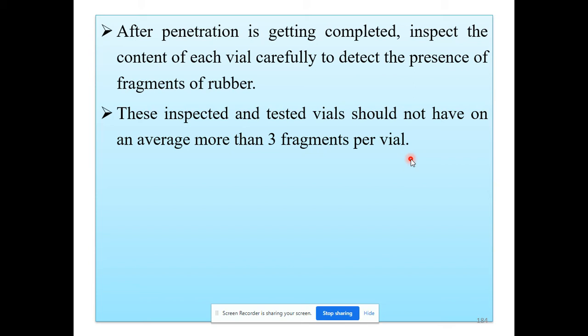To summarize the fragmentation test: take 20 vials, fill them with water, cover their mouth with prepared samples of rubber closer, penetrate the needle through each rubber closer five times, then carry out visual inspection of the content. Each vial should not have more than three fragments due to penetration of the hypodermic needle. This was the second quality control test — the fragmentation test.